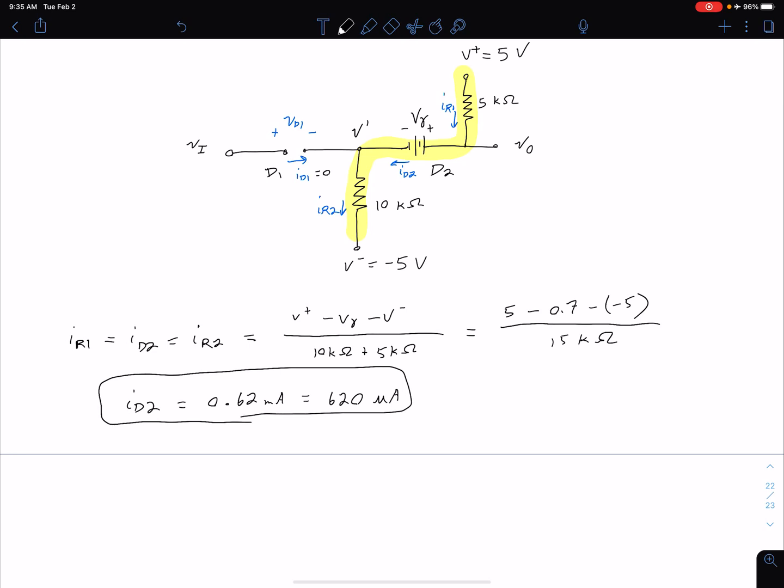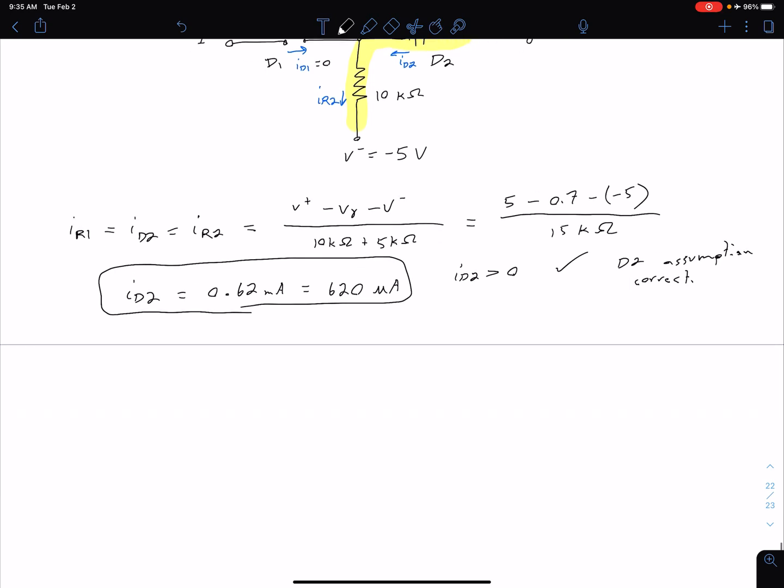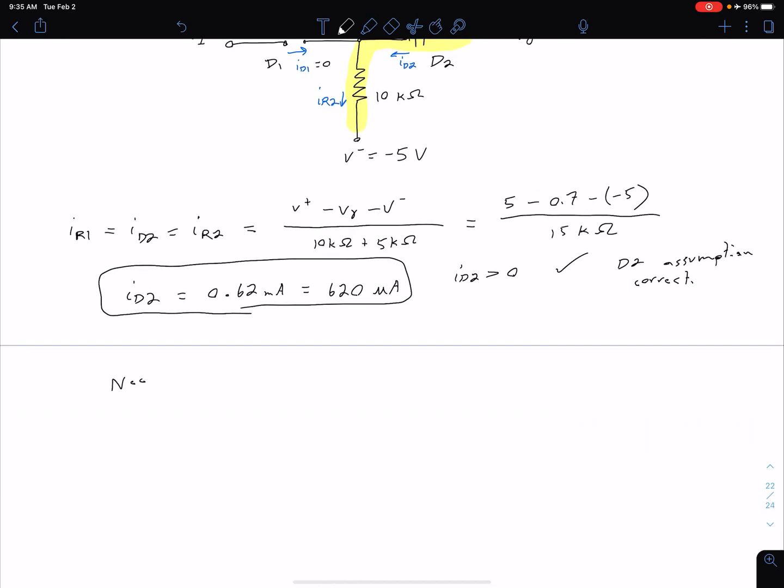So now we can check our assumption for diode D2. We see that for diode D2, I_D2 is greater than 0. So that means our D2 assumption is good. So D2 assumption correct. However that does not necessarily mean that our assumption for D1 is correct so we still need to check our D1 assumption.